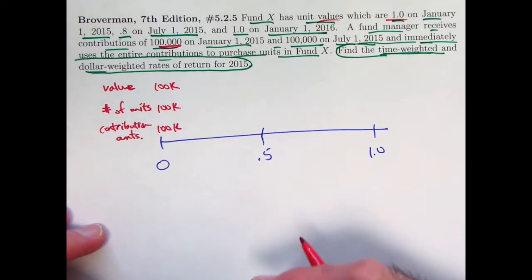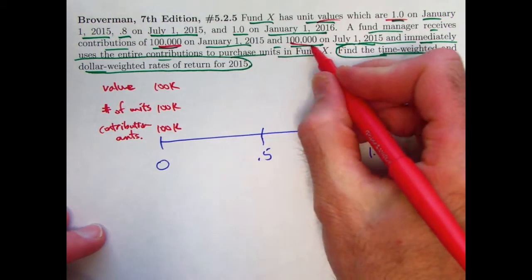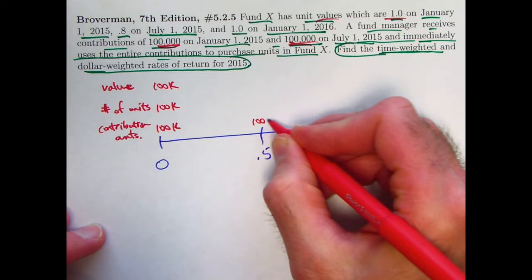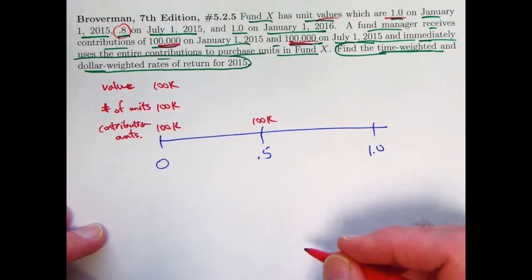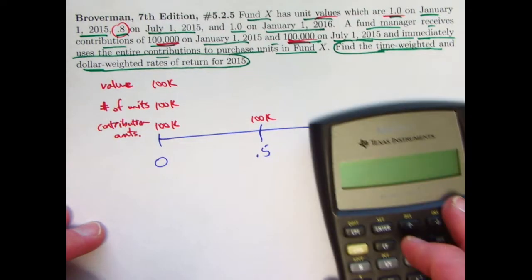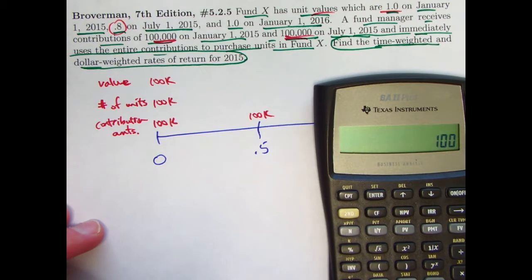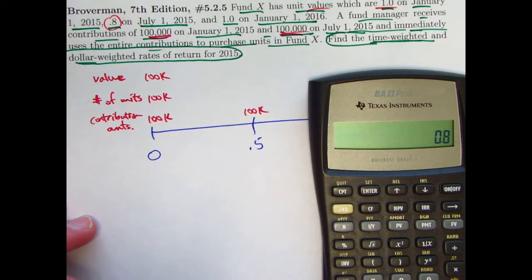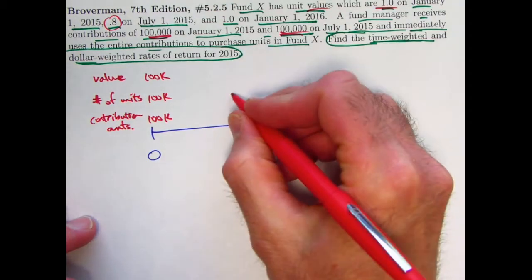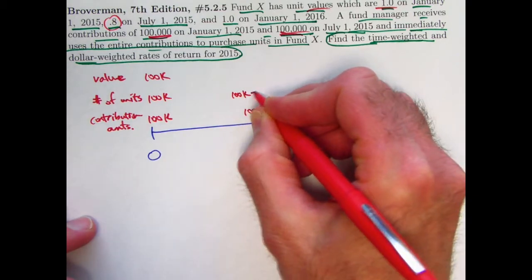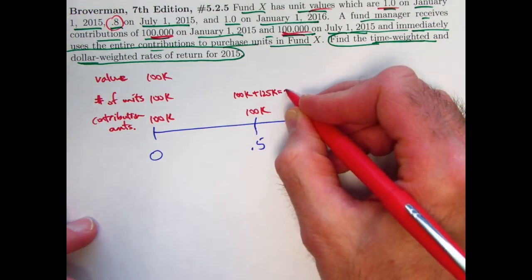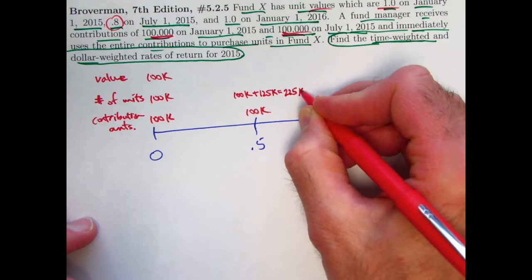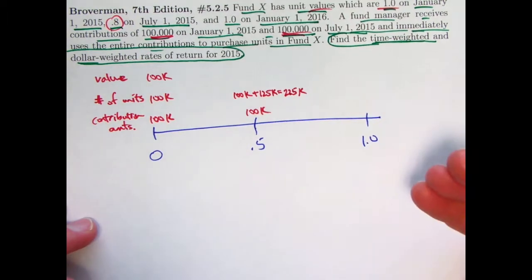But at time 0.5 they're going to be different. At time 0.5, the money received is 100,000, so that's still 100,000, but the price per unit is lower. It's 0.8 per unit, so you can buy more of them. How many can you buy? Take 100,000, divide by 0.8, you're going to be able to buy 125,000 units. So you take your old number of units, add on 125,000 new units that you've purchased, and the new number of units that you now own is 225,000.